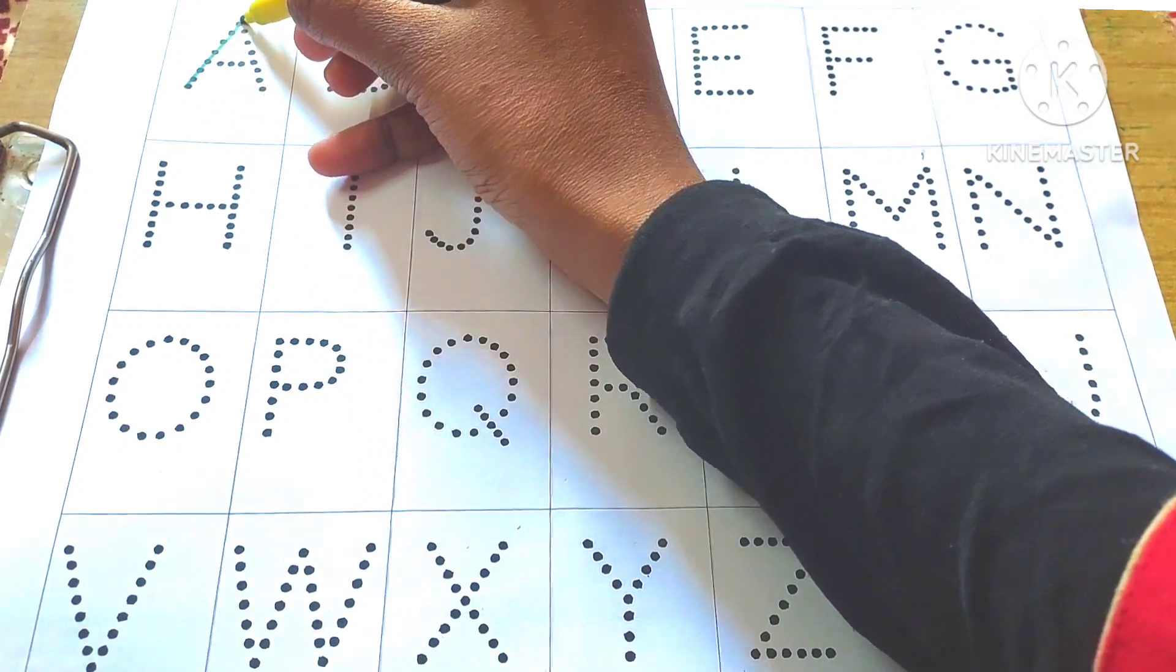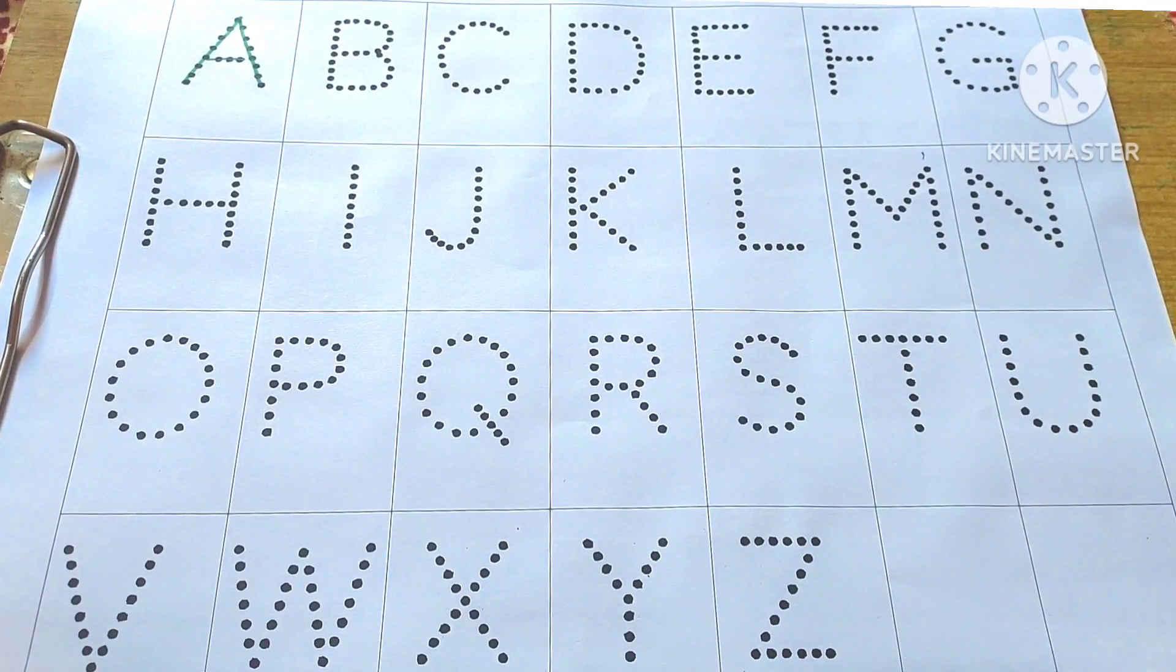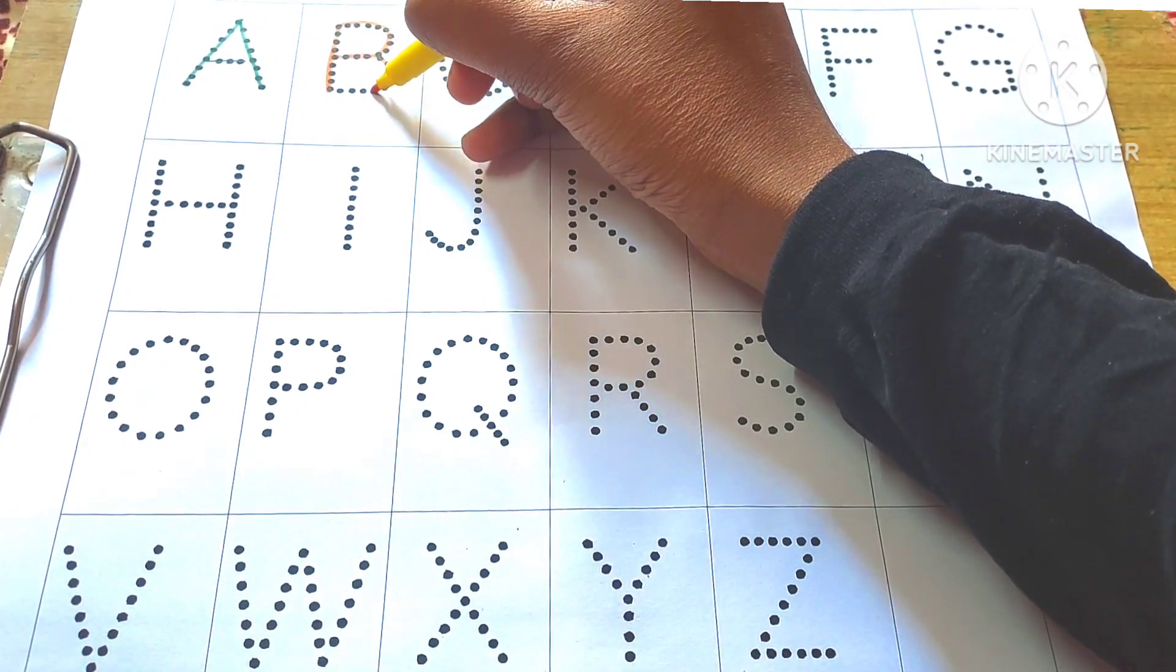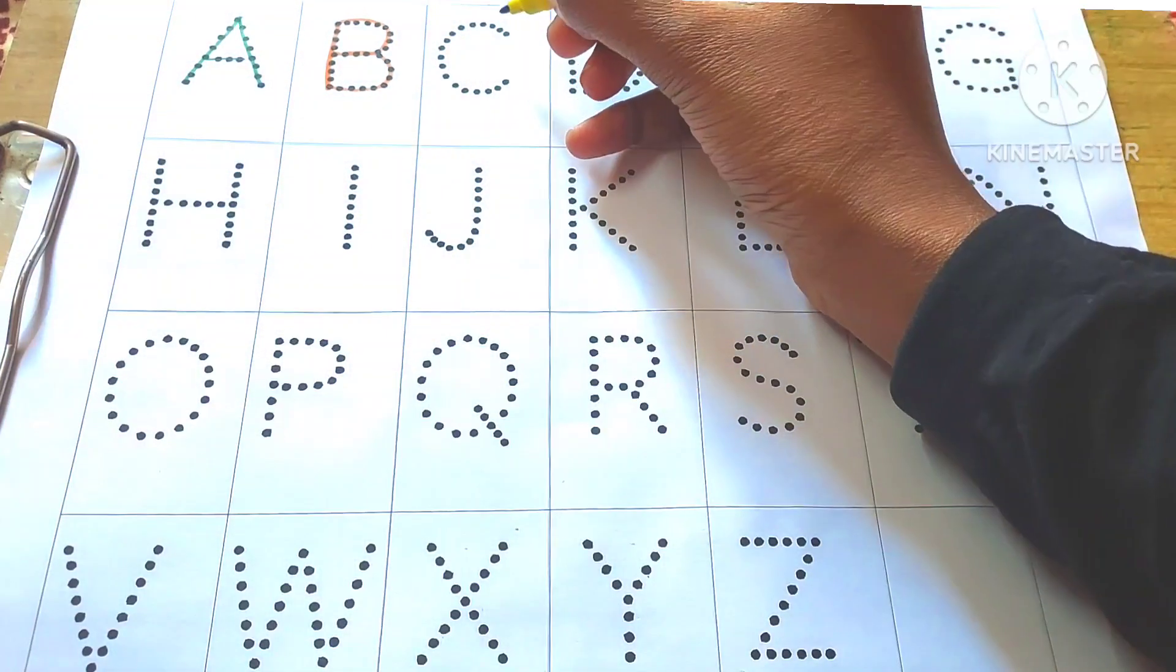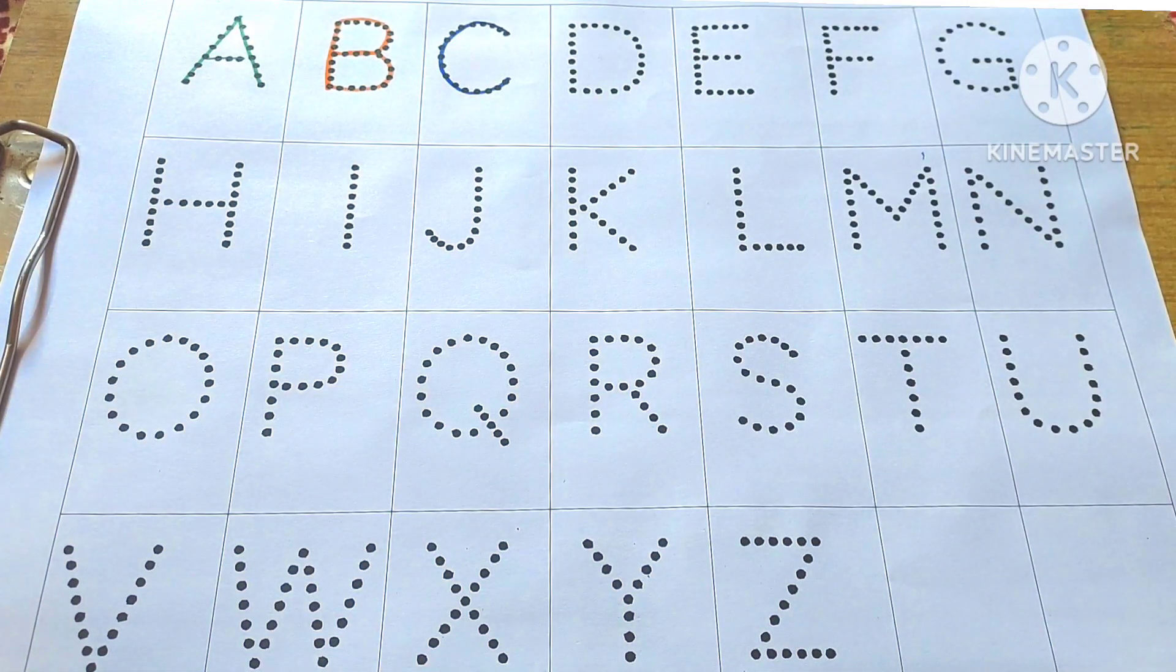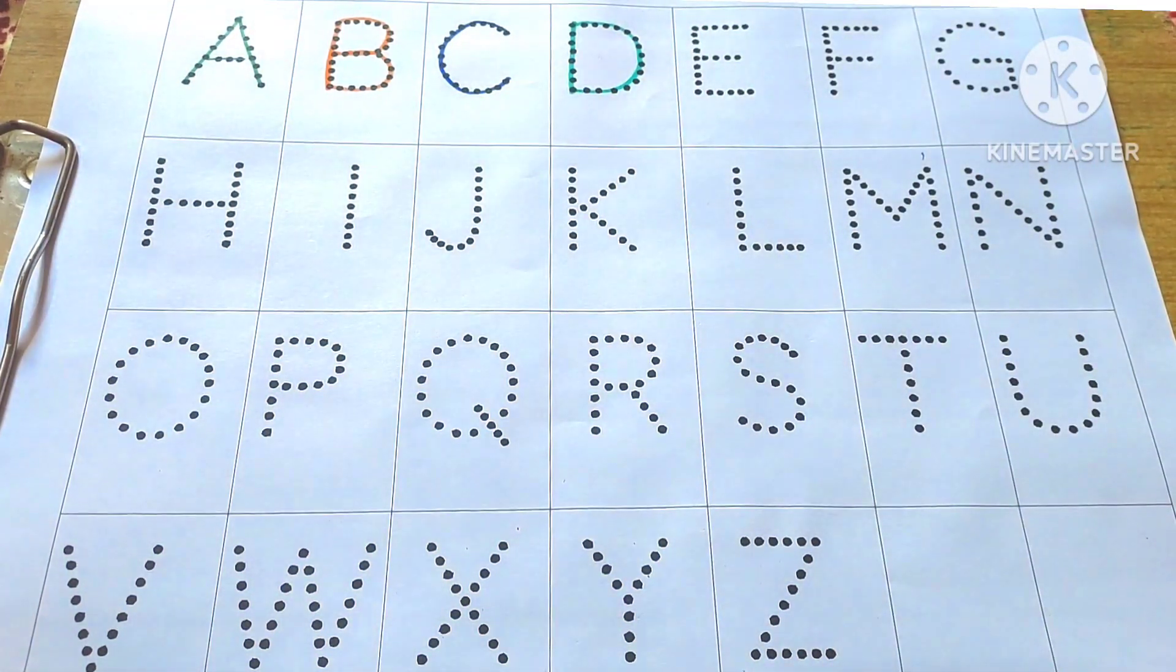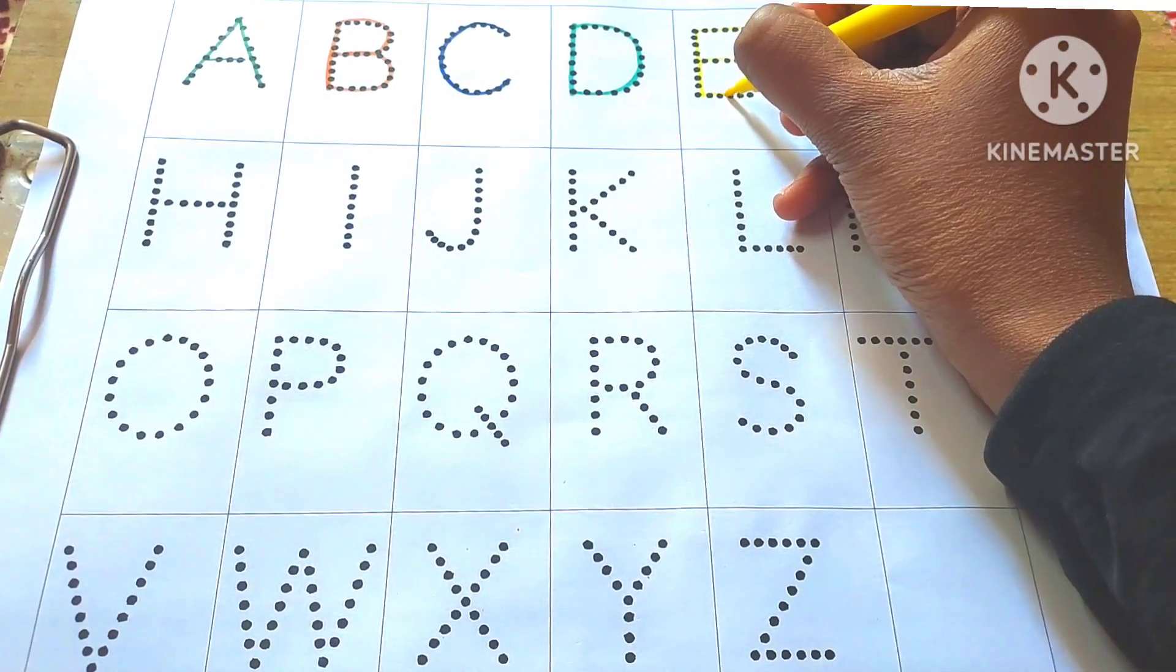A. A for apple. B. B for ball. C. C for cat. D. D for dog. E. E for elephant.